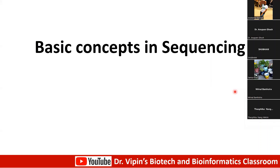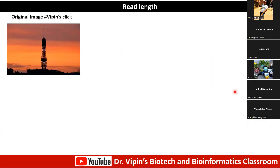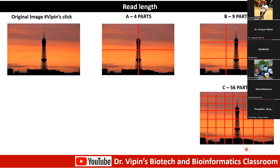Let's talk about some basic concepts in sequencing before we move on to sequencing technologies. One of the concepts is what is known as read length. Here is an image I took while in Paris — this is the Eiffel Tower taken from Châtelet. The challenge I'm giving you is that I'm splitting this picture into four parts, nine parts, and 56 parts, and you have to rearrange them back into the original picture. Which would be most difficult to rearrange?